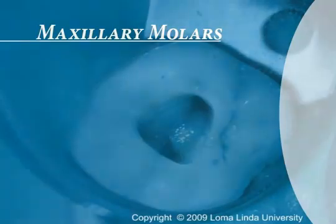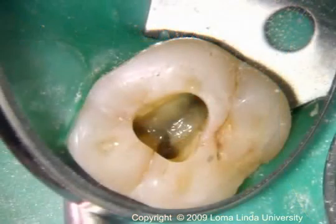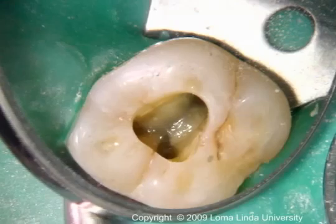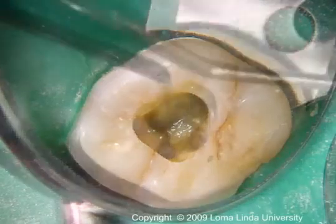Maxillary molars. The outline form for the maxillary first and second molar is very similar. It is triangular and located in the mesial half of the tooth, with the base to the facial and the apex towards the lingual.